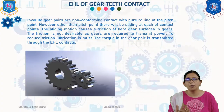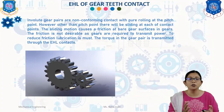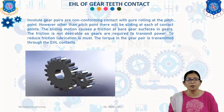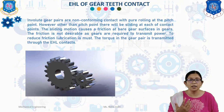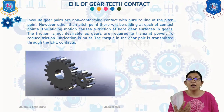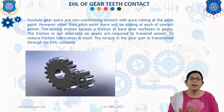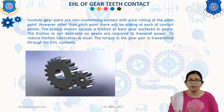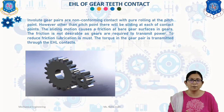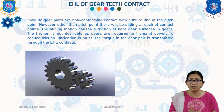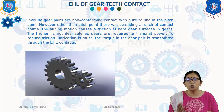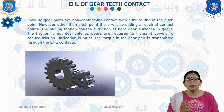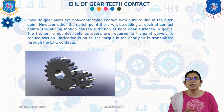Now we will discuss the elastohydrodynamic lubrication of gears. Involute gears are non-conforming contact with pure rolling at the pitch point. However, other than the pitch point there will be sliding at each of the contact points. The sliding motion causes friction at the gear surface. Friction is not desirable as gears are required to transmit power; if there is more friction then power loss will occur. So to reduce friction, lubrication is a must. The torque in the gear pair is transmitted through the EHL contacts.